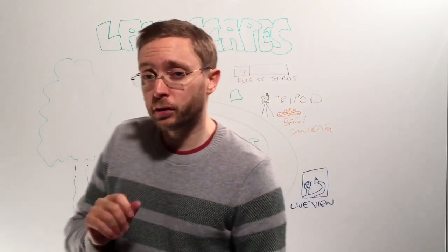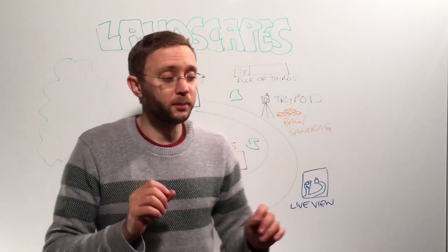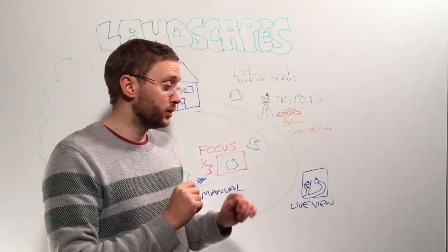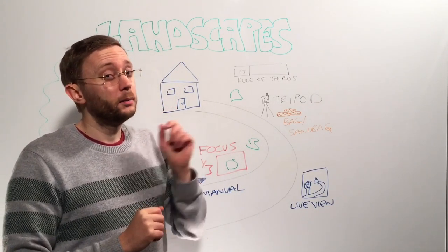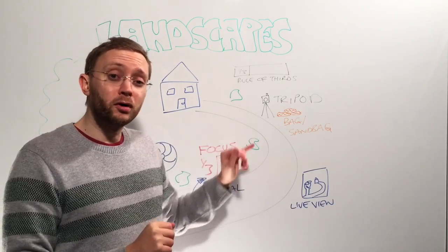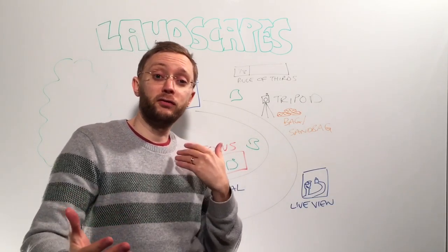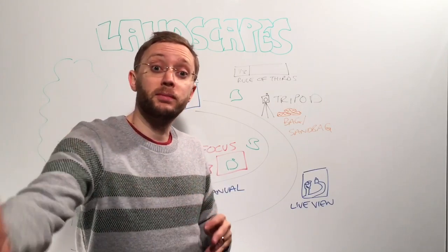When you do focus on your landscape, you're going to want to focus about one third into the frame. So it's tempting to focus on the thing that's nearest—in this case it would be the tree. Don't do that. Focus on the thing that's about one third into the frame. Because focal points have focus in front of them a little bit and mostly behind them.